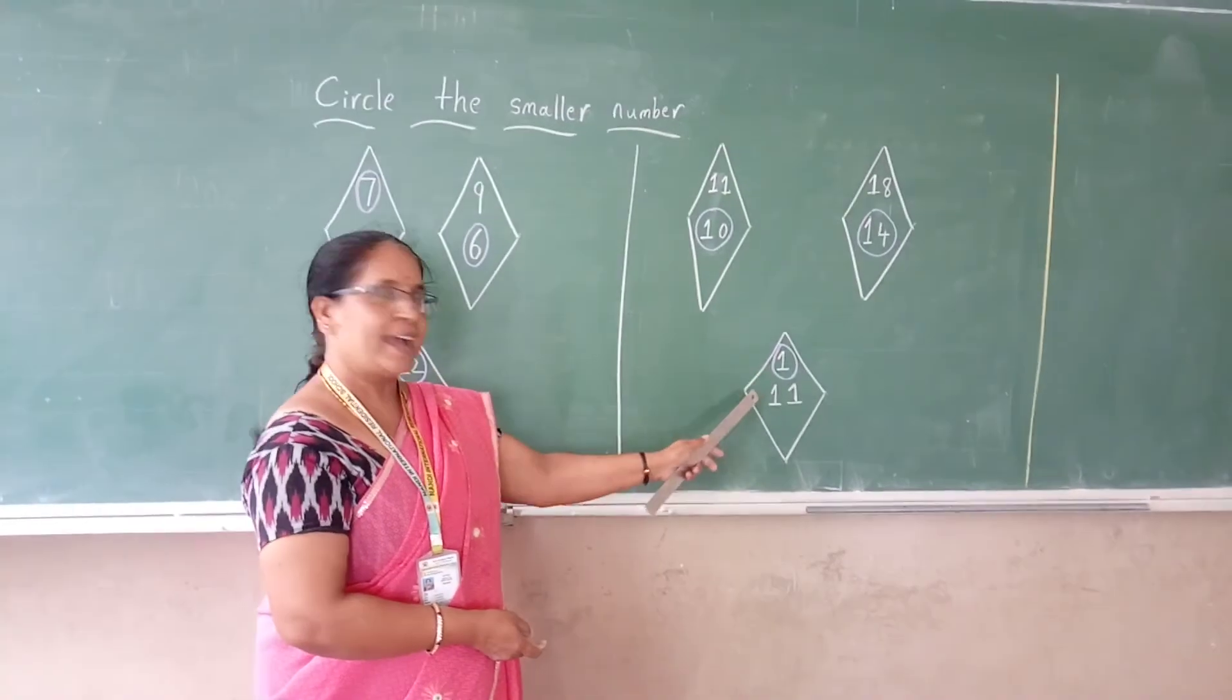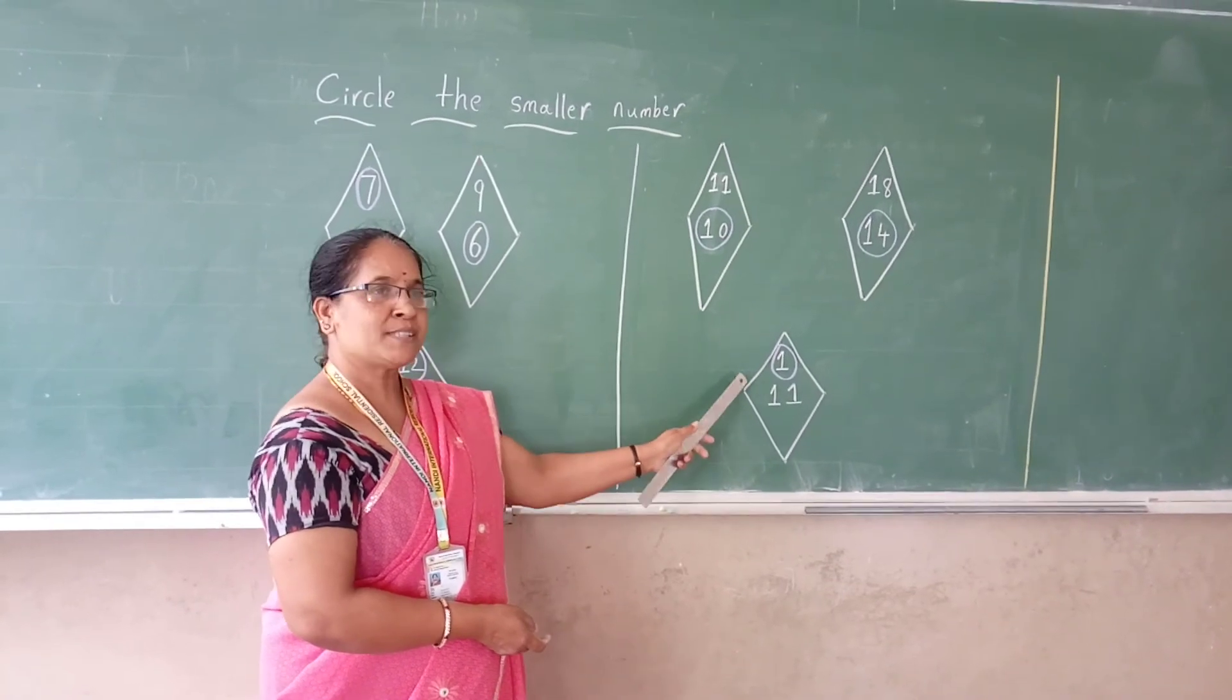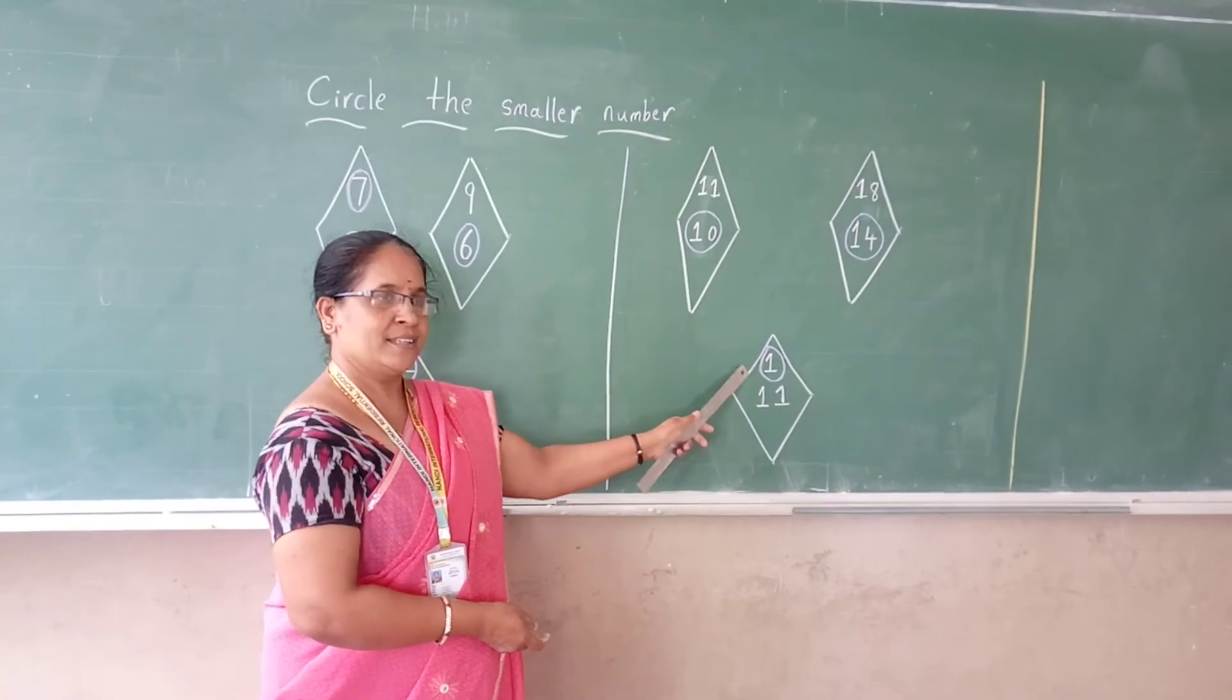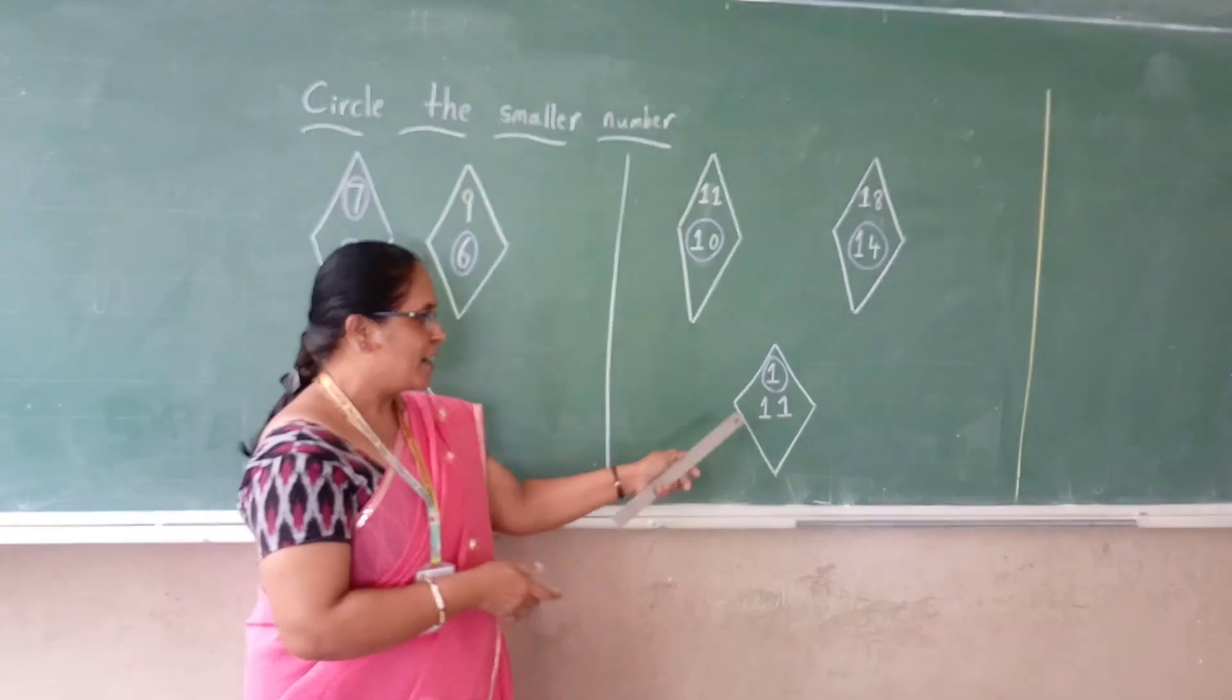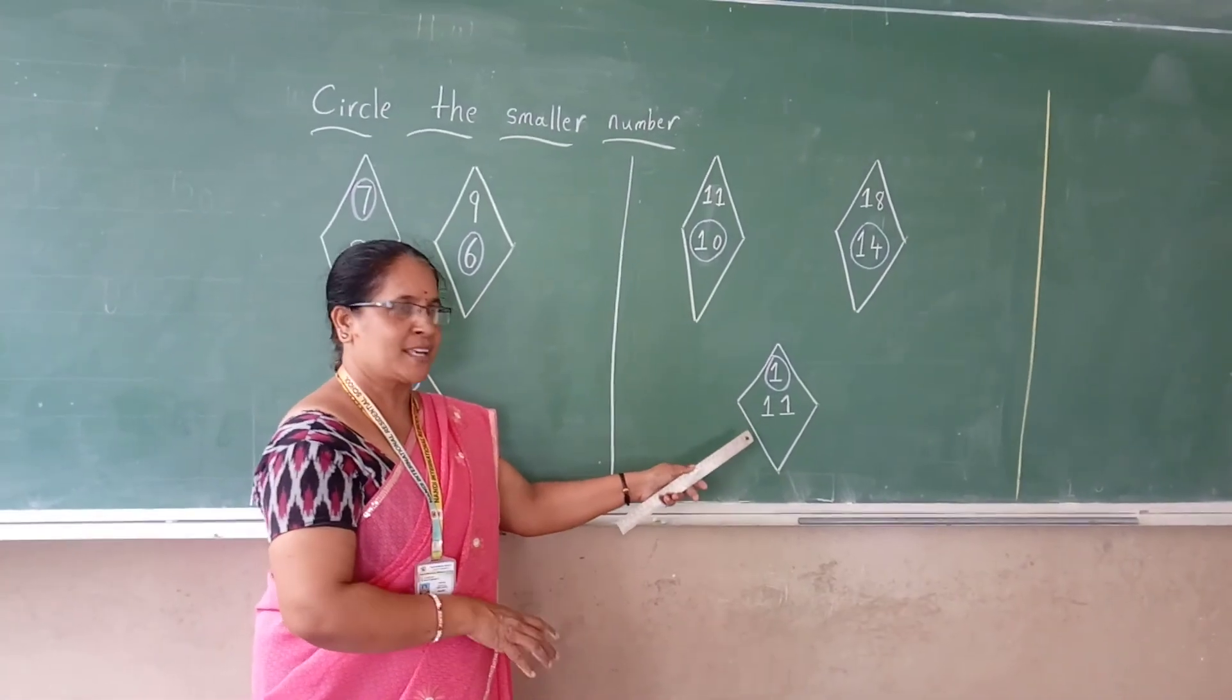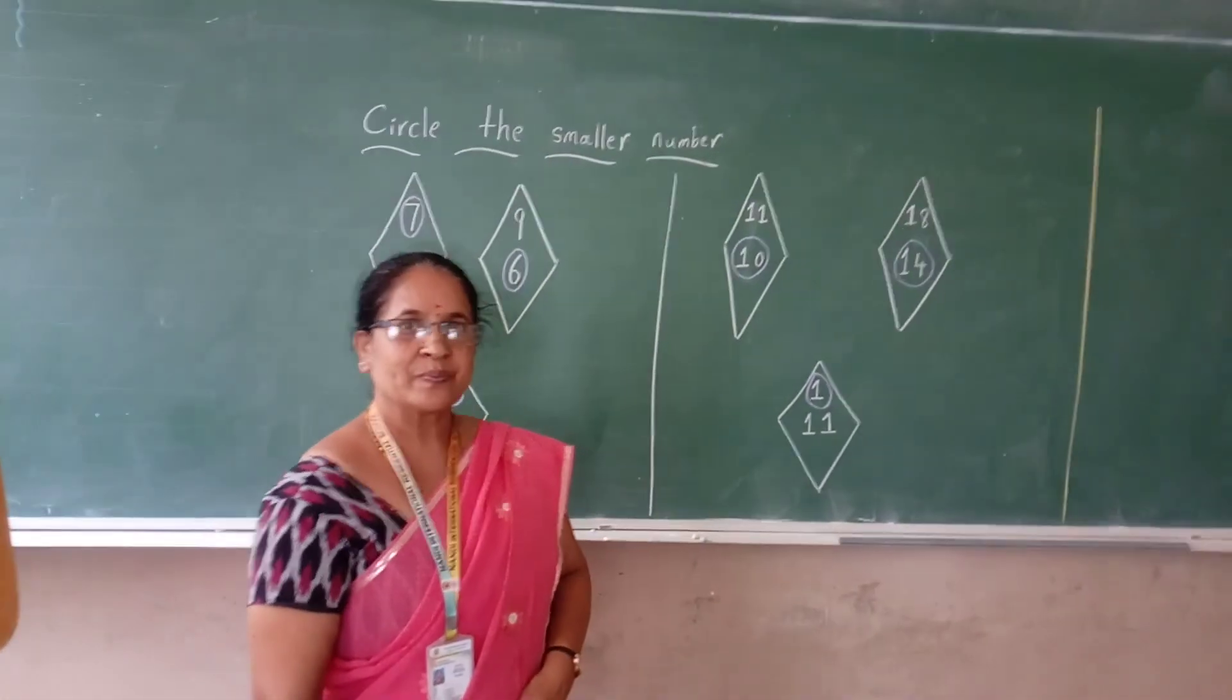Then lastly, it is 1 and 11 is there. Which one is the smaller number? 1. After 1, all the other numbers are coming. Fine. Thank you.